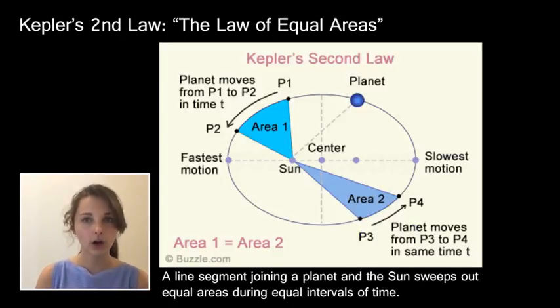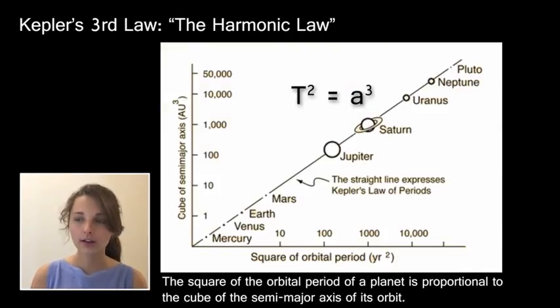Kepler's second law, or the law of equal areas: A line segment joining a planet and the sun sweeps out equal areas during equal intervals of time. Kepler's third law: the square of the orbital period of a planet is proportional to the cube of the semi-major axis of its orbit. This may be expressed as p squared equals a cubed. Students should be comfortable using this relation with units of astronomical units for distance and years for period of objects orbiting the sun, but need not be familiar with the role that mass plays for using Kepler's law in systems outside our own solar system.